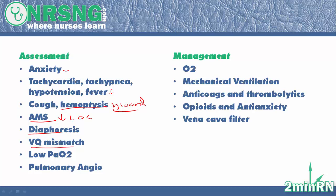You're going to also notice VQ mismatch — ventilation perfusion. This means a ventilation perfusion scan, and what that's going to show you is basically a VQ mismatch. You're going to notice an extremely low PaO2. Their partial pressure of oxygen in their blood is going to be very low — obviously, they're not getting oxygen to the blood.